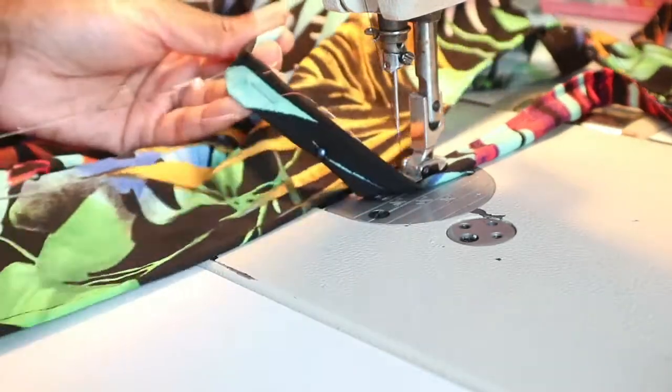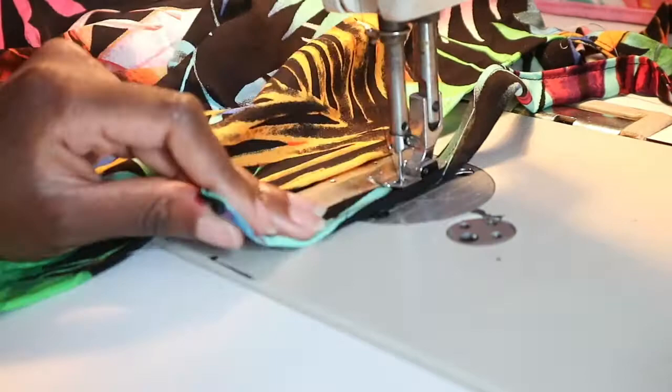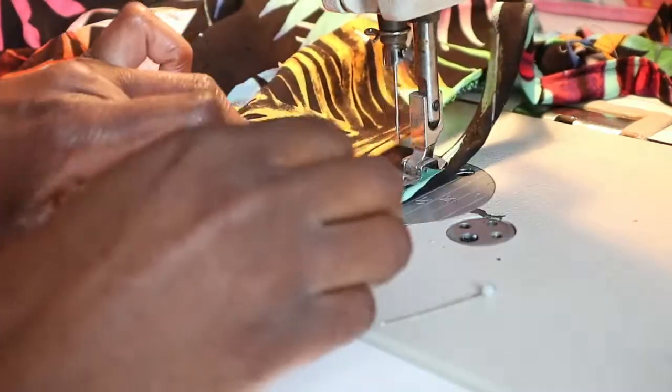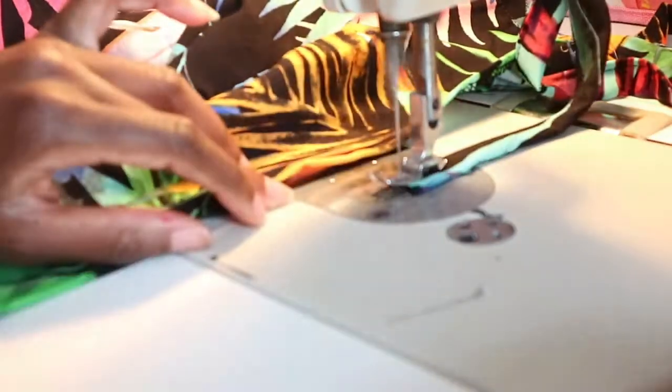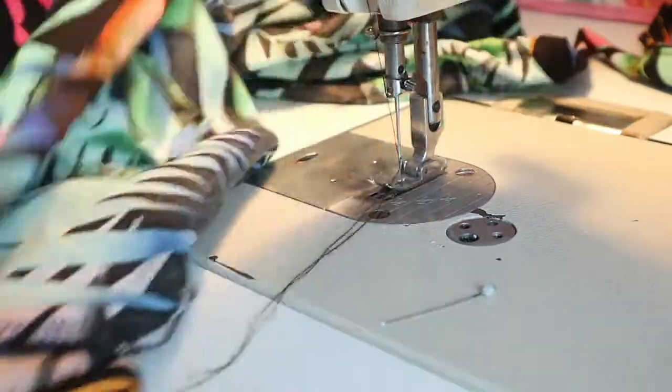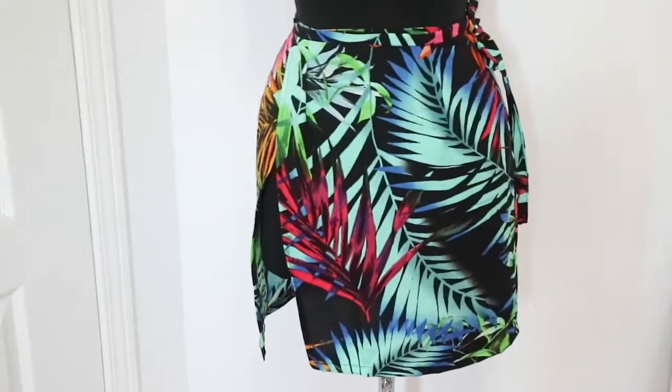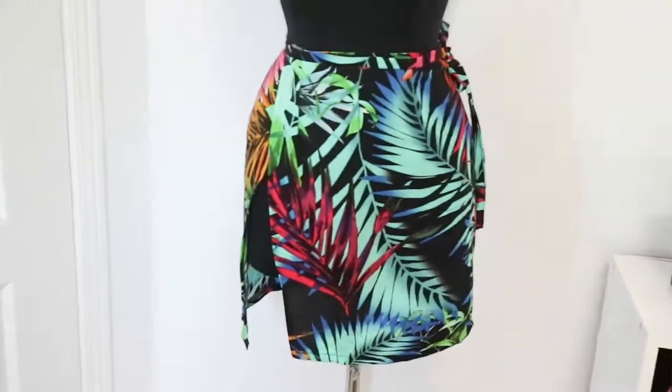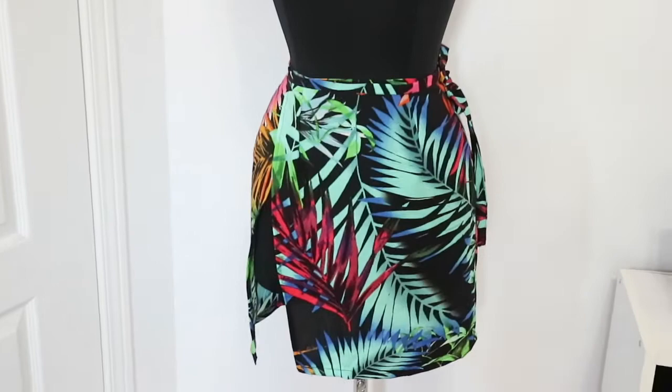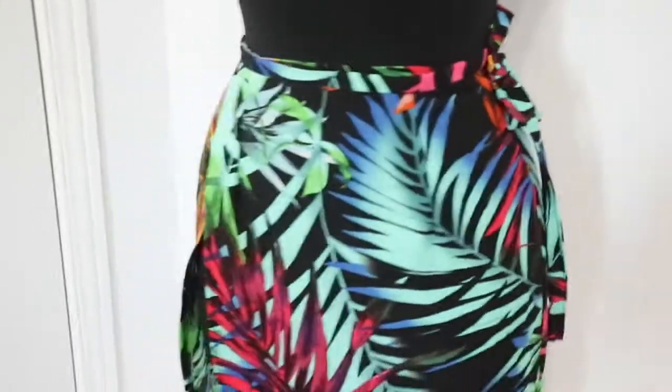Once you finish stitching down your strings, you want to go ahead and hem the bottom of the skirt. Then you're pretty much finished. There's nothing left to do but to style it and wear it how you please. I think this is a really easy tutorial, and I hope that you guys learned something from this tutorial. Make sure you guys comment, like, and subscribe, and I will definitely see you in my next video.